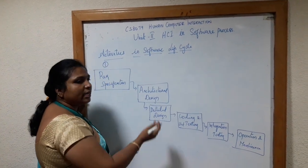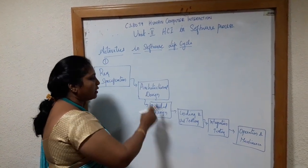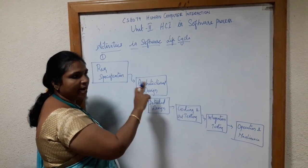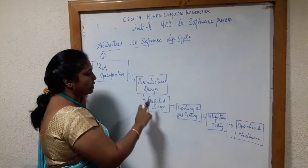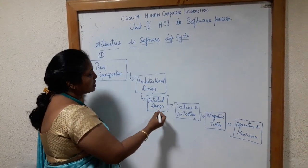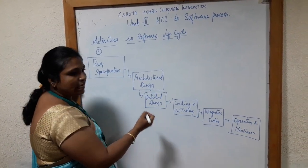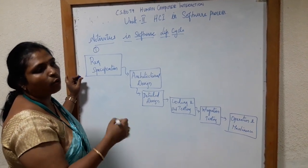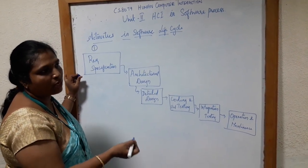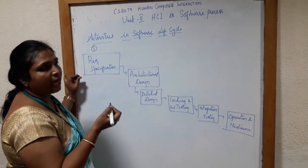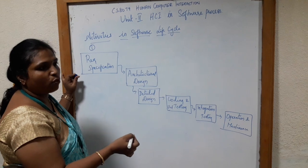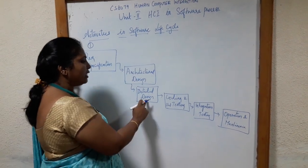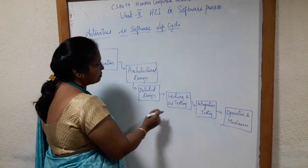We start with a simple design and then fine-tune it to arrive at a detailed design. In the architectural design, we have an abstract view of the system, whereas in the detailed design we include all the low-level components — what processes are involved and how data flows among the processes.